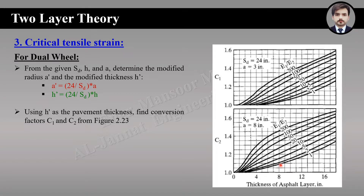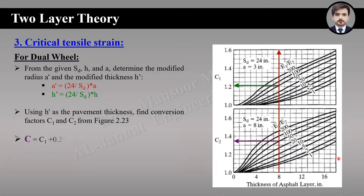After that we find a conversion factor using figure 2.23. This figure has two input parameters: the modulus ratio E1 by E2, and the modified thickness H-dash. For example, assuming H-dash equals 8 and modulus ratio equals 50, from the intersecting point of the modulus line on the upper figure we get C1, and from the lower figure we get C2.